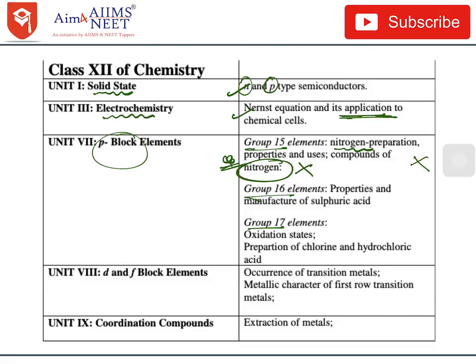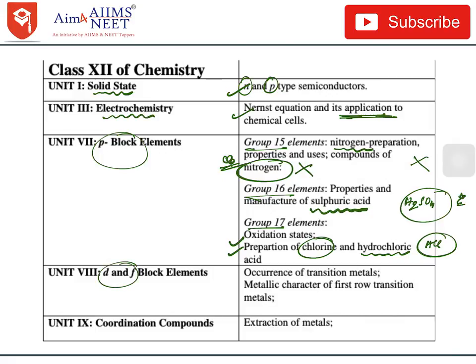In Group 16 — properties and manufacture of sulphuric acid is deleted. In Group 17 — oxidation state and preparation of chlorine and hydrochloric acid is deleted. So H₂SO₄ and HCl are less important and deleted. In Unit 8 — D and F Block Elements — occurrence of transition metals and metallic character of first row transition metals has been deleted. In Unit 9 — Coordination Compounds, which was the most important chapter in last year's NEET and AIIMS — only extraction of metals has been deleted; all other important parts remain.